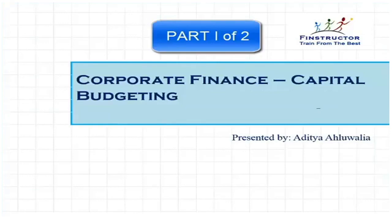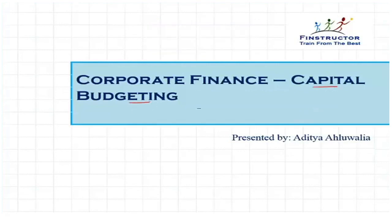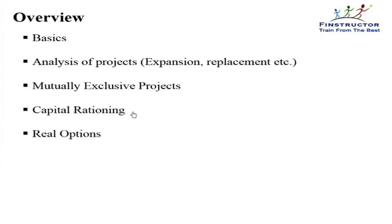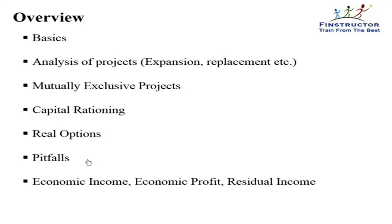Let's start with Reading 25 of the CFA curriculum, a very important reading that deals with the concept of capital budgeting, an introduction to which we already got at Level 1. We will revise the basics, understand the analysis of expansion, replacement and other projects, understand mutually exclusive projects, capital rationing, real options, pitfalls of capital budgeting, economic income, economic profit, residual income methods, and alternatives to DCF for calculating project value and NPV.